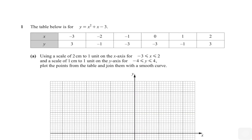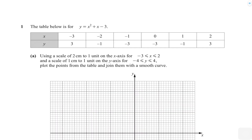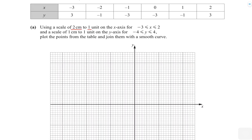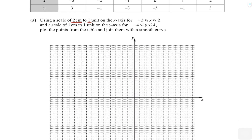You're given the scale which is two centimeters equals to one unit, that means you're going to leave two boxes and mark one, starting from minus three going all the way to two. For y it's one centimeter equals to one unit, and that goes from negative four to four.